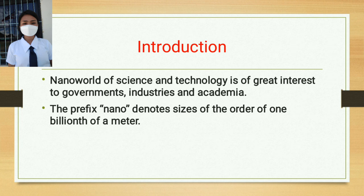For example, a human hair is between 50,000 and 100,000 nanometers thick. A single sheet of paper is around 75,000 nanometers thick. That's how small nano is.